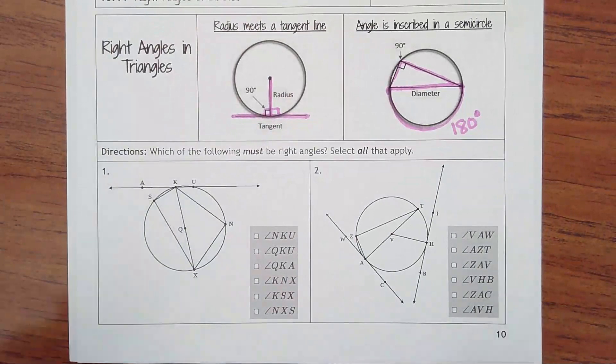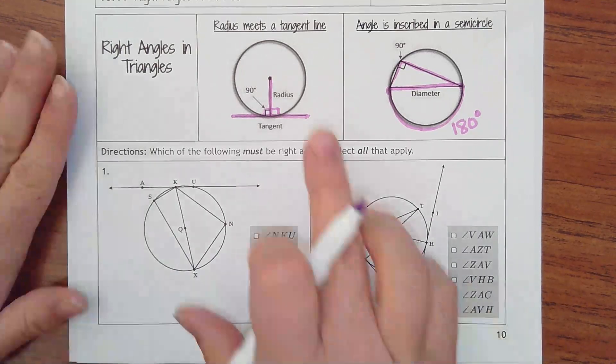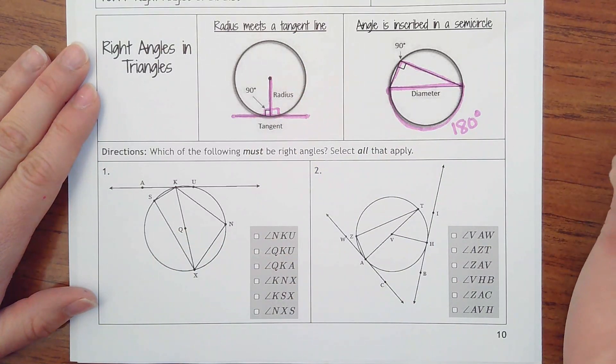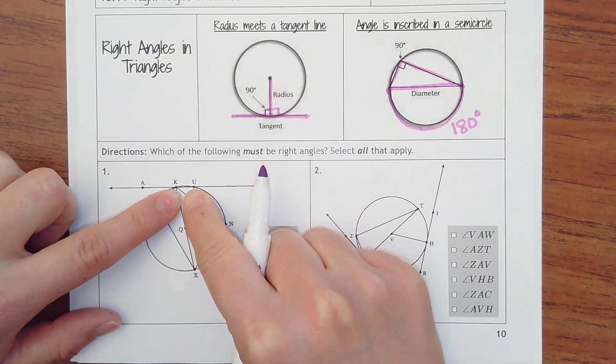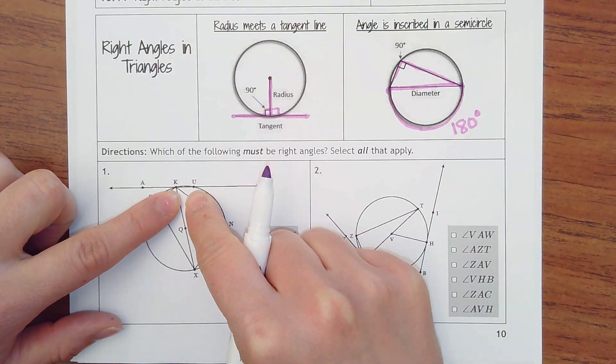So our job is to now look at these crazy pictures and try to figure out which of the following must be right angles, select all that apply. So the first thing I would look for is, is there a tangent line? That means the line on the outside of the circle, it's only going to touch the circle in one spot. This is tricky because it almost is a tangent line, but you can see it's going through K and U. So that's a secant line, that's not a tangent line.